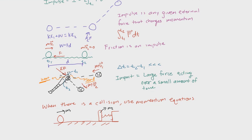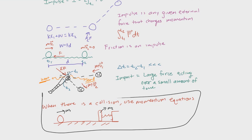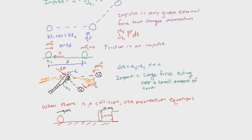If two objects with mass are colliding, we do have to apply momentum. When there is a collision, use the momentum equation. That's the main thing to get from this video. I think I've covered everything about impulse and impact, so I'll see you in the next video.